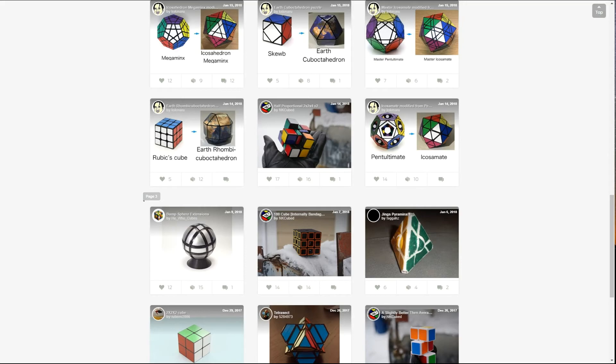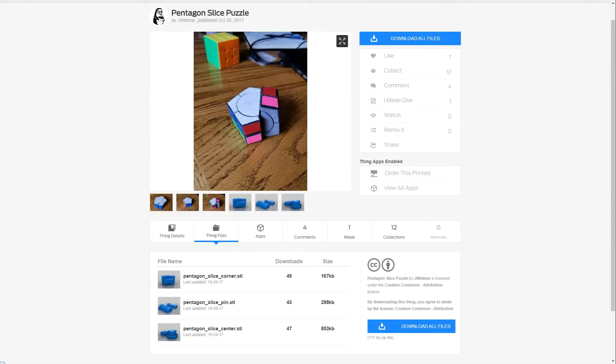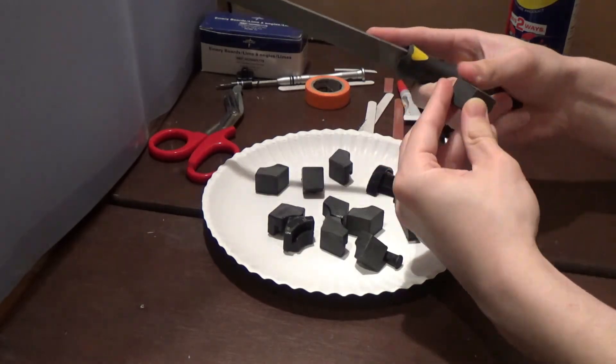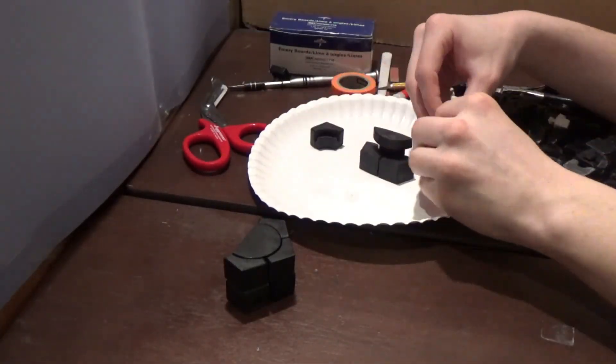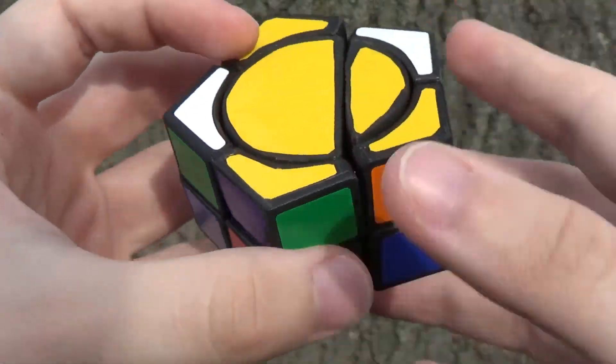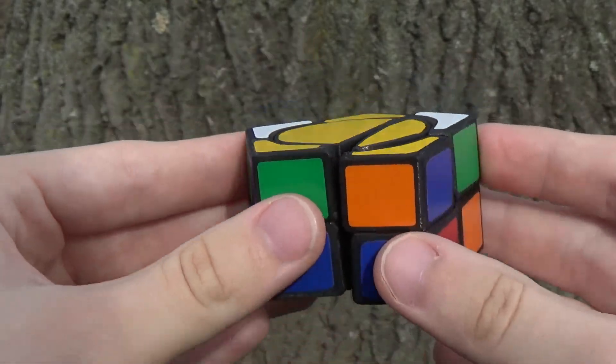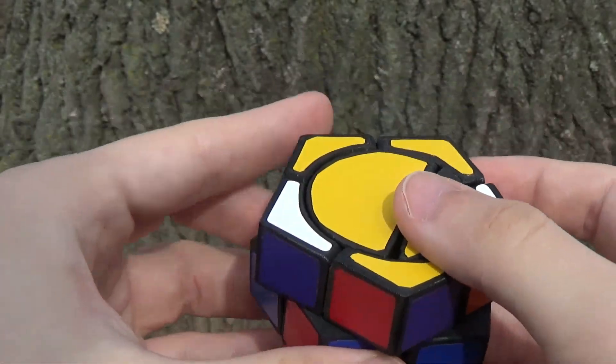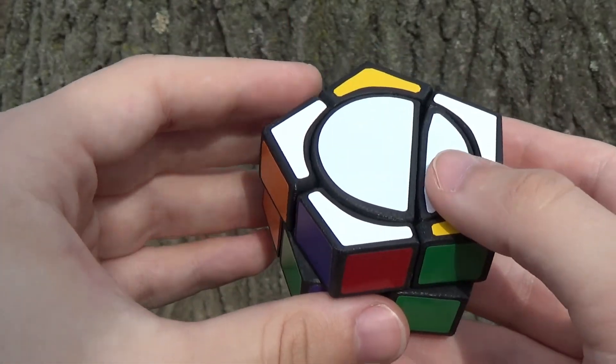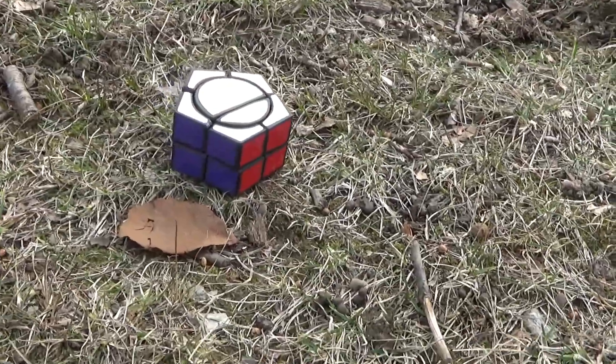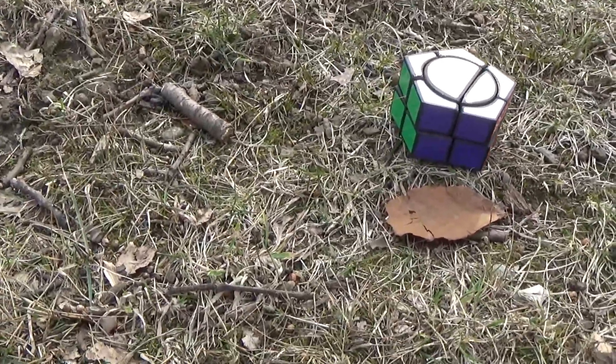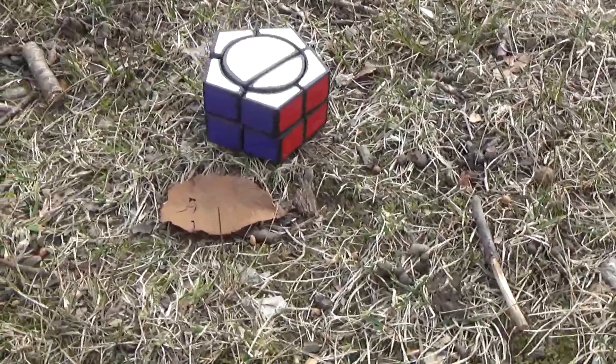In each episode, I will review a puzzle design that has been posted publicly. For each one, I will go through the process of printing it, post-processing, and then assembly. I'll then solve the puzzle and give my thoughts on turning quality, difficulty, and whether or not I personally think it's worth printing. So without further ado, let's get into the very first puzzle of the series, The Slice Pentagon by Jay Widmar.